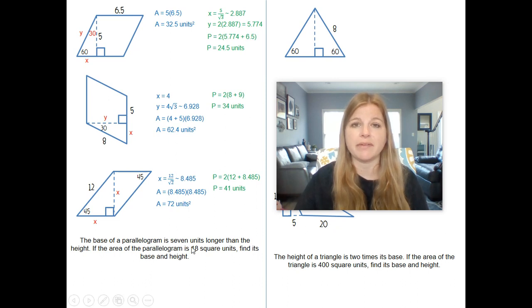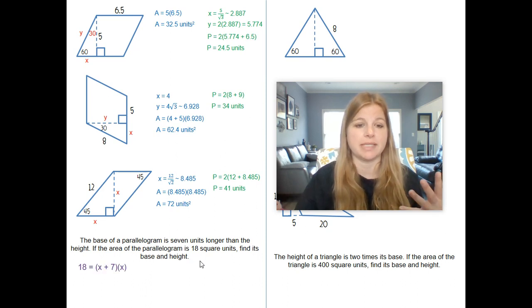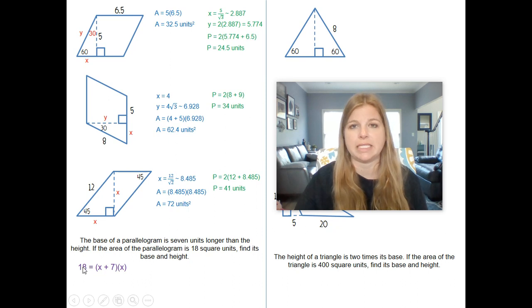The base of a parallelogram is 7 units longer than the height. If the area of the parallelogram is 18 square units, find its base and height. Okay, so base of a parallelogram is 7 units longer than the height. So I'm going to call the height H, and then the base would be, I'm sorry, X. And the base would be X plus 7. And if I multiply those together, the height and the base, that should be equal to 18.